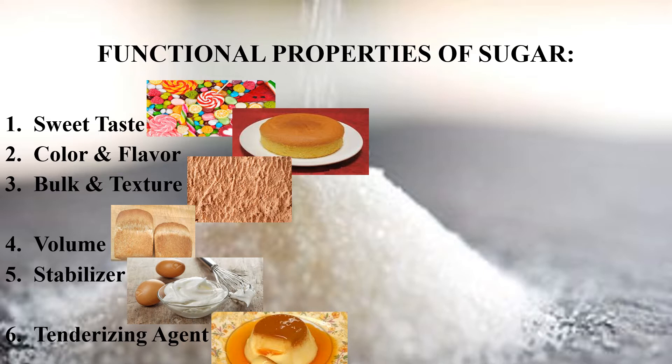Phir uske baad hai stabilizers. Iski best example aap sabko pata hai — egg white meringues. Meringues mein jo egg white hota hai, usme sugar dalti hai, aur woh sugar ke saath jab hum usko vigorous beating kertay hain, toh jo uska volume hai woh double ho jata hai apni original volume se. Sugar also causes the foam to have smaller cells and a finer texture as a result of the increased beating. Foam formation bhi hoti hai egg white mein.